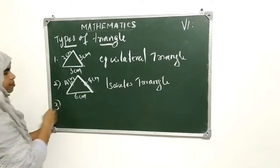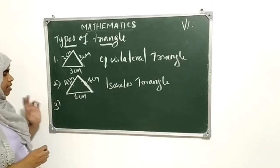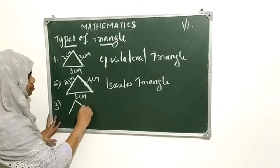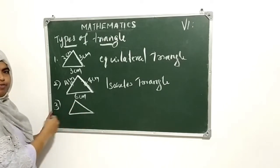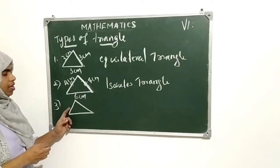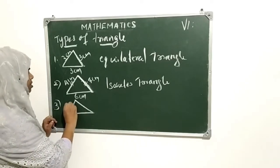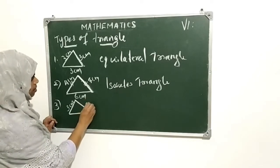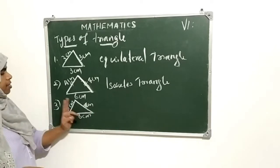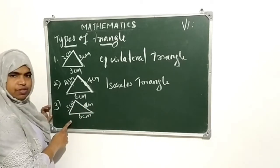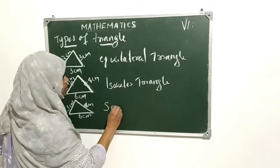Third type: here the three sides are all different in length. This is three centimeters, four centimeters, six centimeters — all three sides are different. These types of triangles are called scalene triangles.